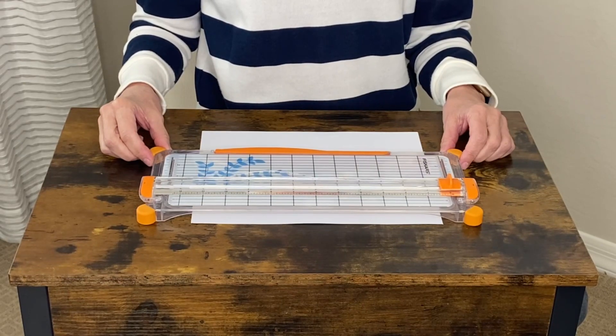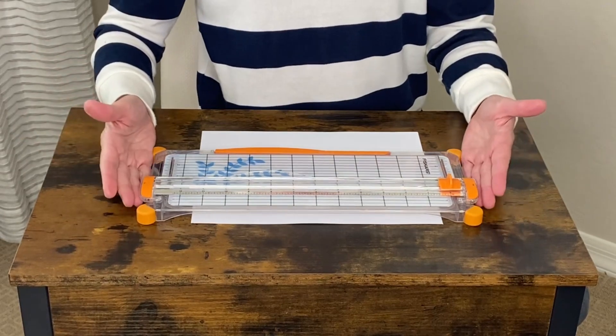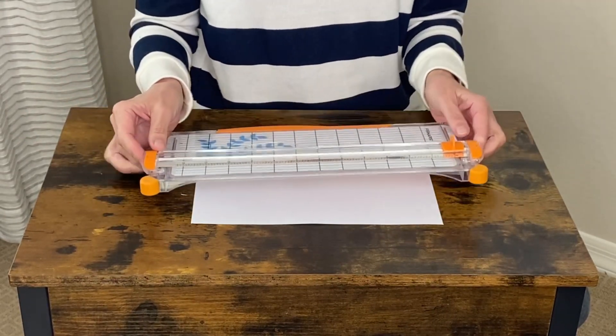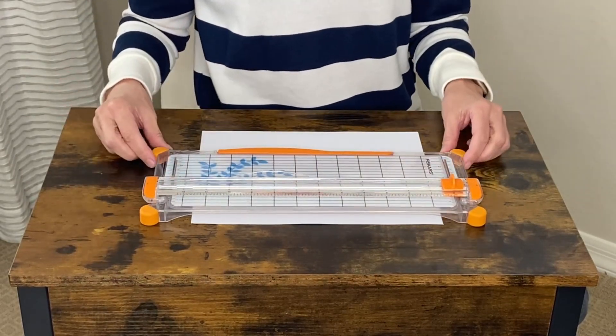Let's take a closer look at this Fiskars Sure-Cut Portable Paper Trimmer. This trimmer is 12 inches in length, and I like it because it's very portable. You can always take it with you if you're going to any type of party or craft party with your friends.